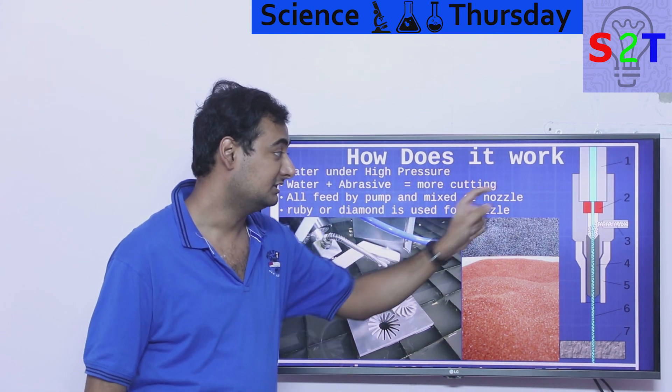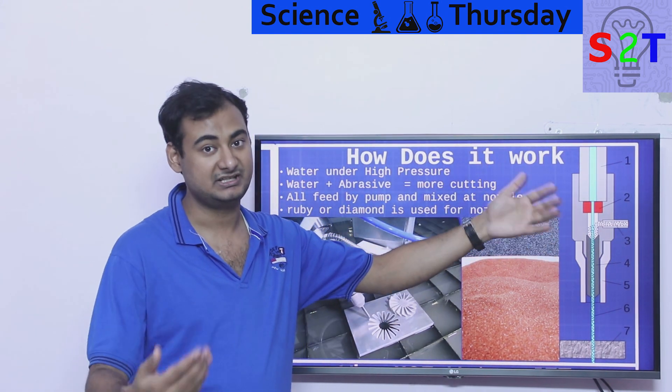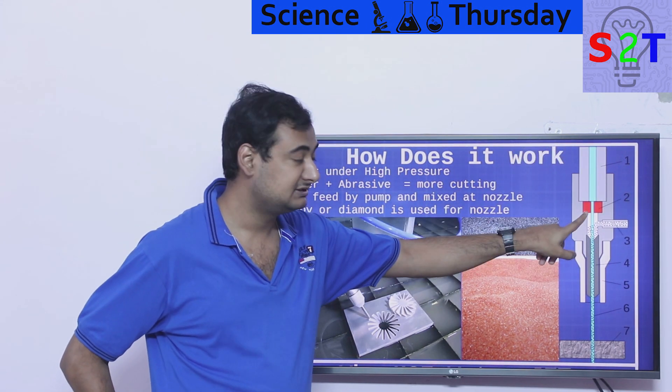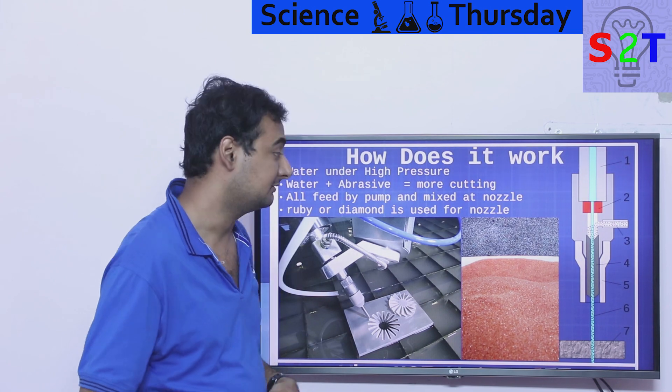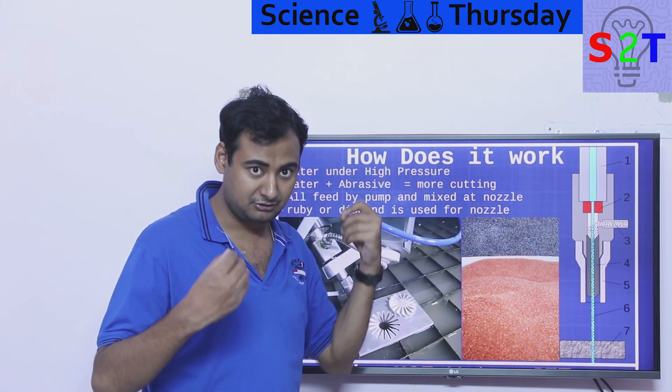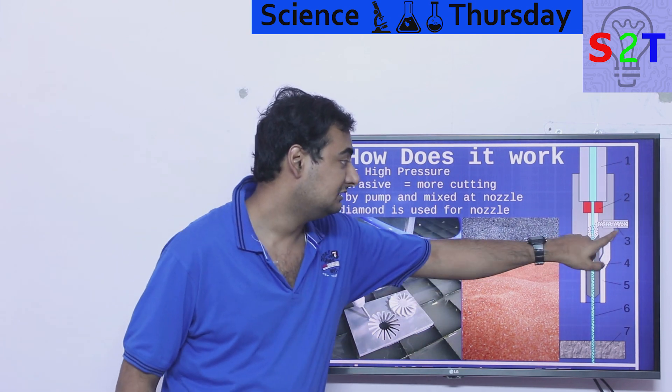Now this nozzle is made out of generally ruby or diamond. You have to pay attention to this one part. So far the water is just pure, basically distilled water if you can use it or filtered water. So it does not have the same amount of grinding power. Benefit of that is this will last. The moment it becomes a jet, now it has the cutting force.